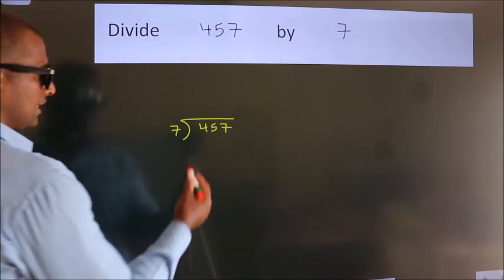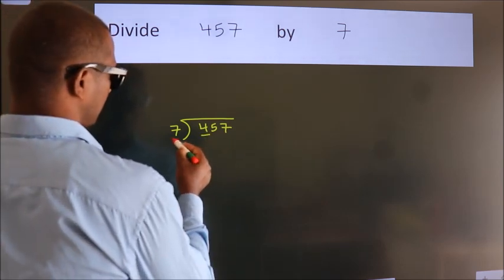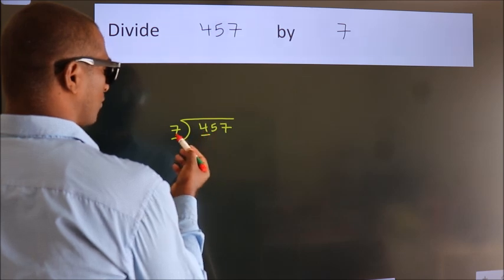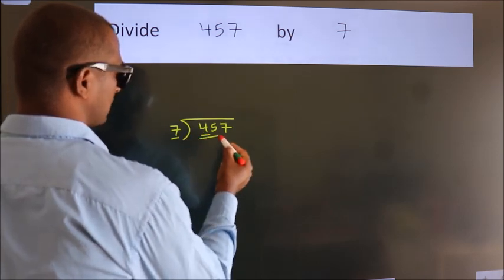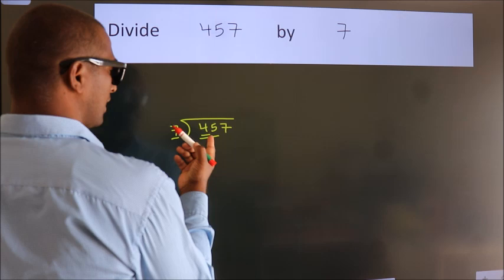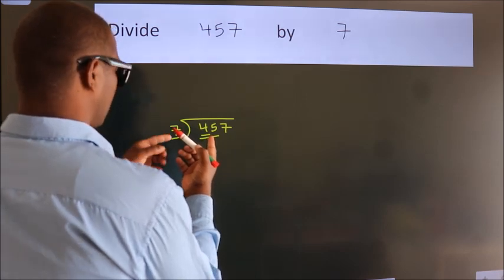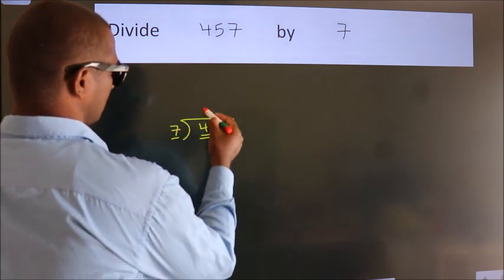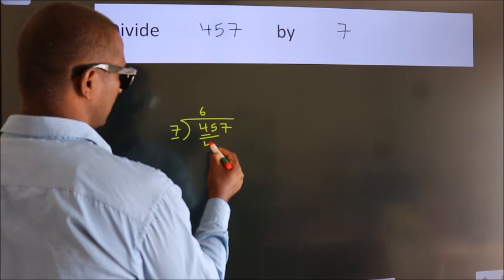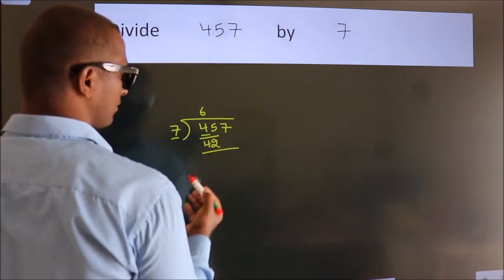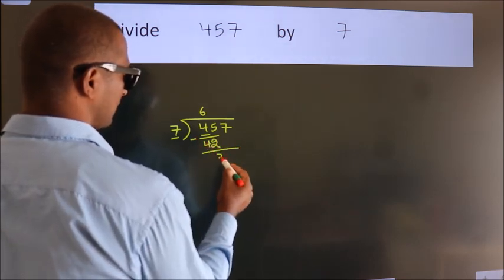Next. Here we have 4, here 7. 4 is smaller than 7, so we should take 2 numbers: 45. A number close to 45 in the 7 table is 7 times 6, which is 42. Now we should subtract. We get 3.